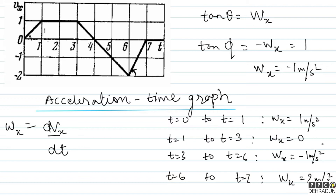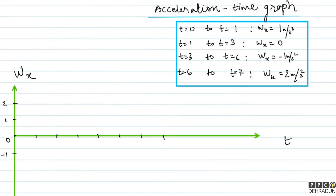Aur yeh meter per second square main tab bol pa raha hoon jab maine yeh assume kiya ki saari details jo yahan di hain wo SI units mein hain. Toh chalo bachyo, in data ke hisaab se graph banate hain. Yahan par maine wx aur t ko denote kar rakha hai. T equal to 0 se t equal to 1 ki baat karein toh wx ko kitna rakhna hai — 1 meter per second square.